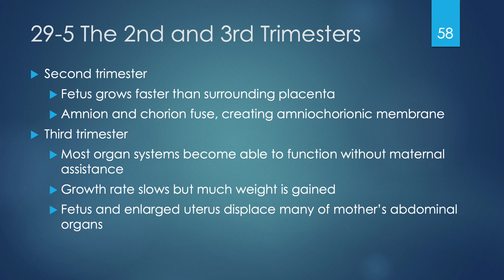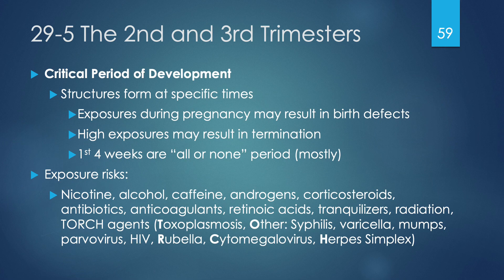The enlarged uterus and fetus displace many abdominal organs — including bowels — and flip the liver more horizontally anterior by the end of the third trimester. The critical period of development indicates that because specific parts of the developing embryo or fetus develop at specific times, it's at the point of greatest growth that they're most vulnerable to insult. Exposure to a toxin at that point can result in a birth defect specific to that body part, and high exposures to any toxin can result in termination, which is a miscarriage.